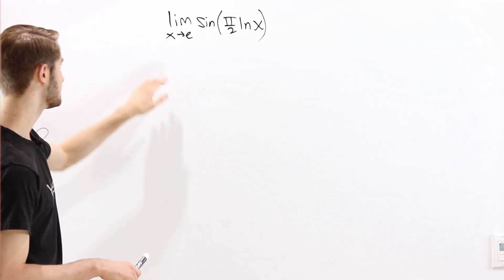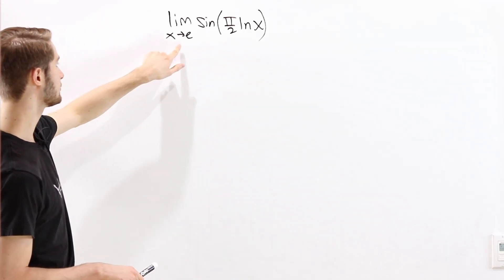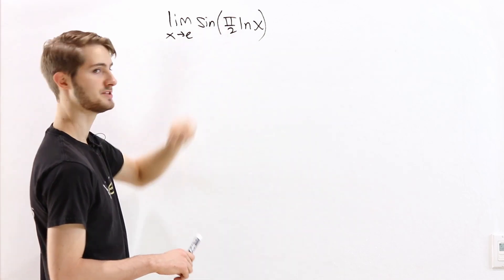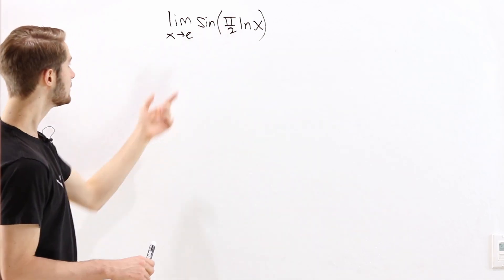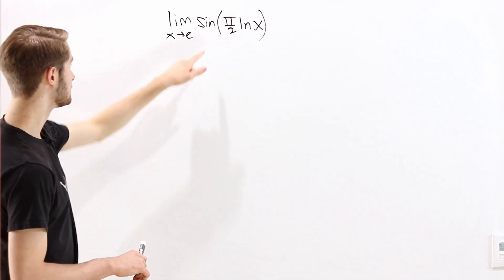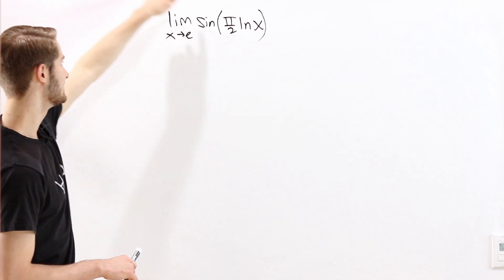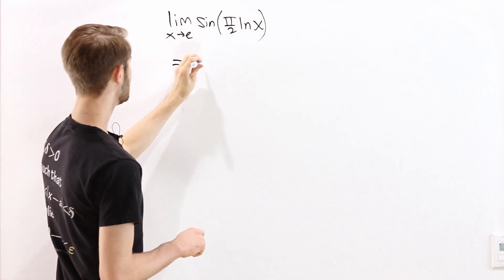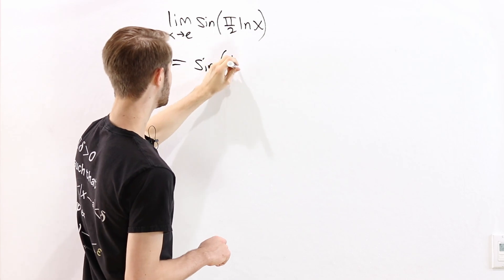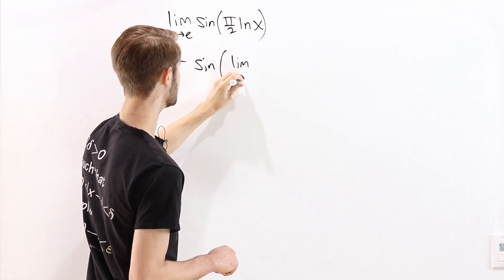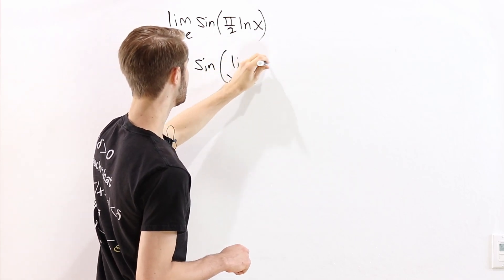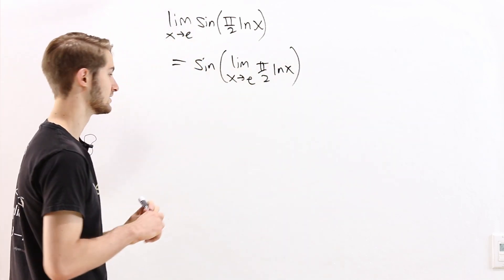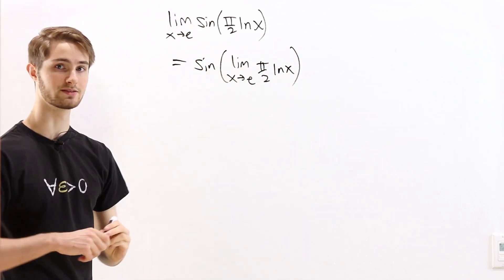Let's say we want to find the limit as x approaches e of sine of pi over 2 times ln x. One way that we can do this limit is to bring the sine to the outside of the limit. So this equals the sine of the limit as x approaches e of pi over 2 times ln x — we can just switch the sine and the limit.